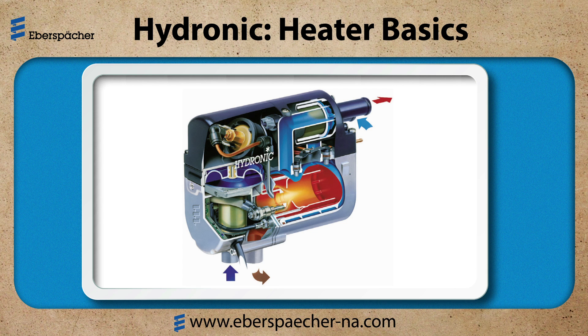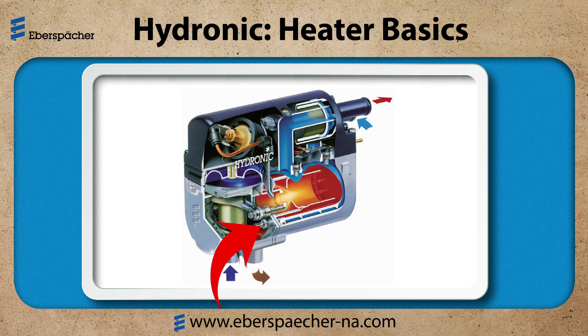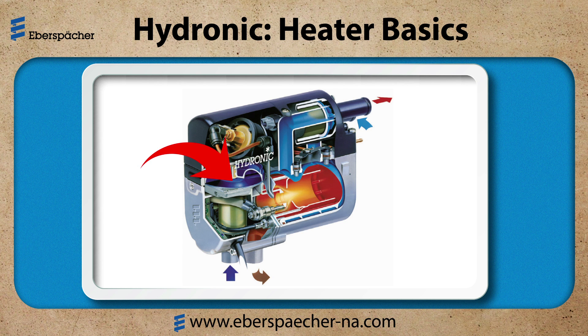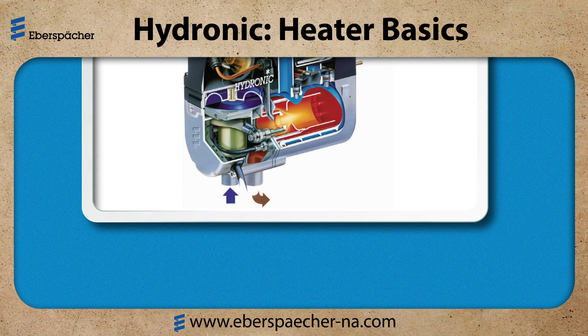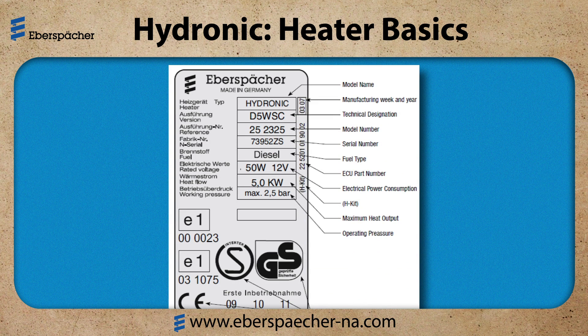Back to the components: we have the glow pin, the flame sensor, integrated ECU, and the combustion air blower. All of the heaters have an identification label on them — a permanent one and a removable one. This allows you to locate the duplicate label in an area that may be more accessible to retrieve the information.